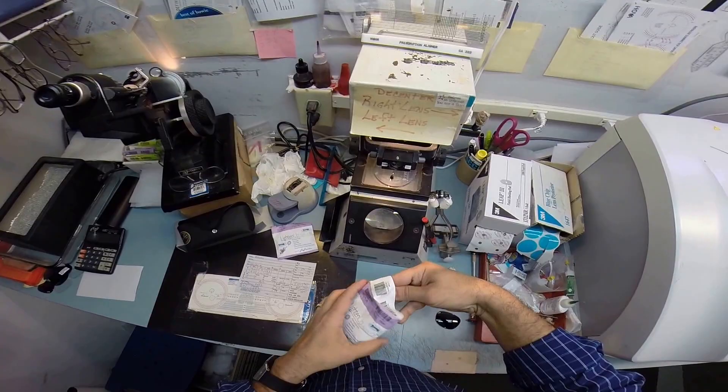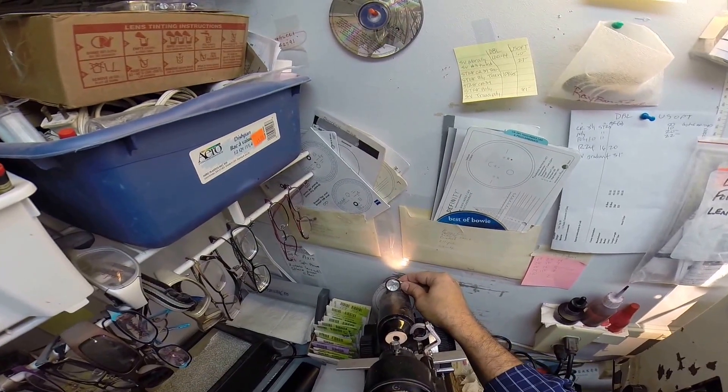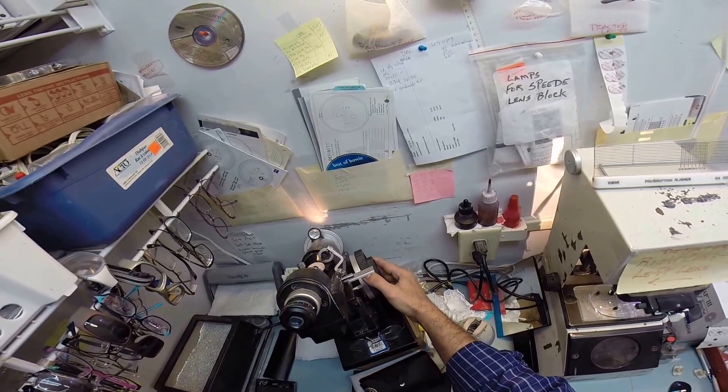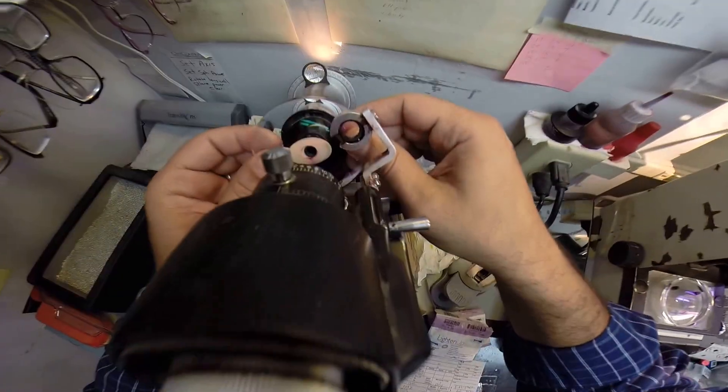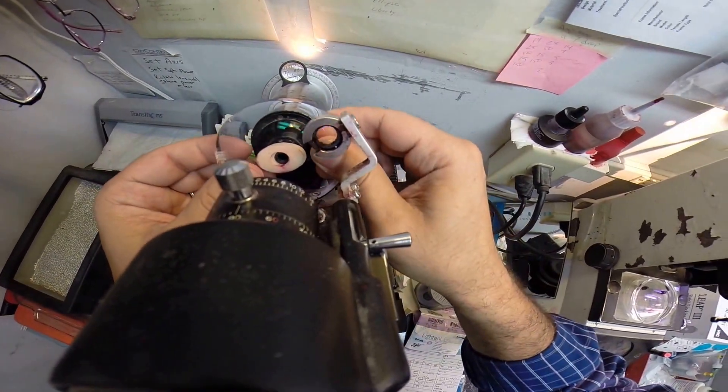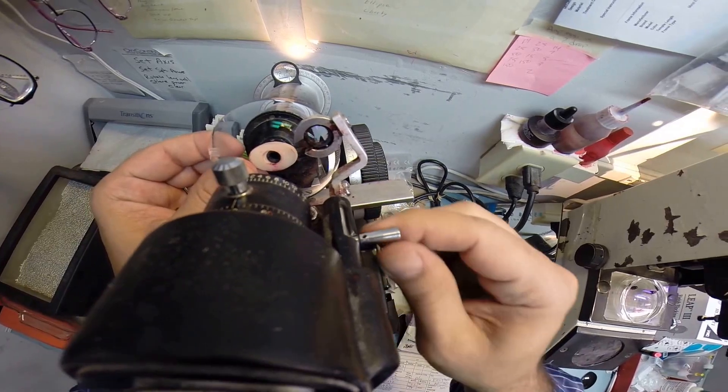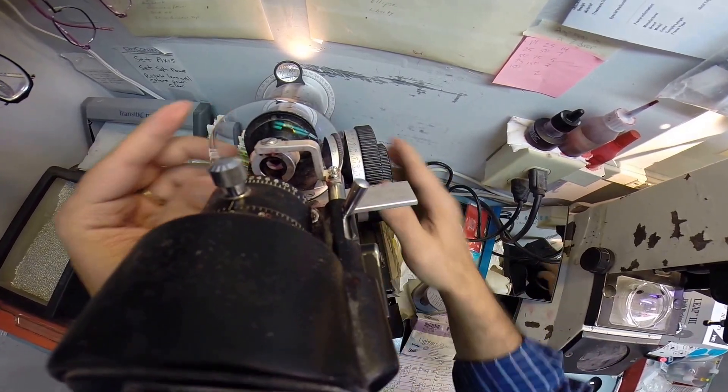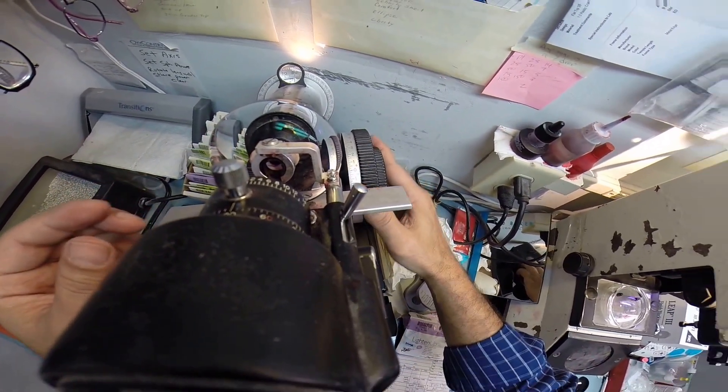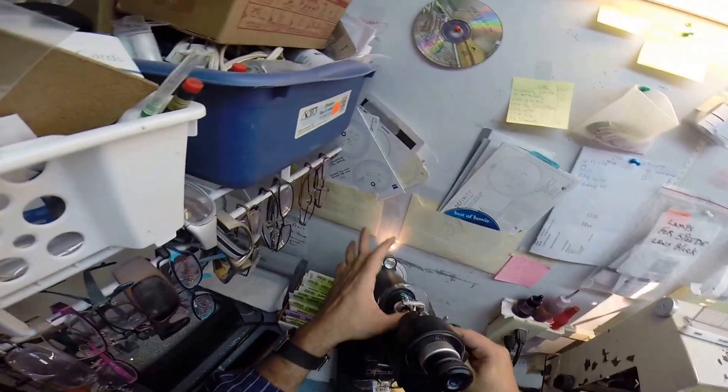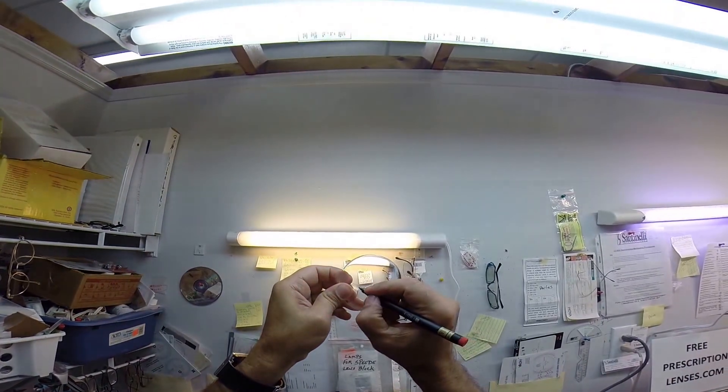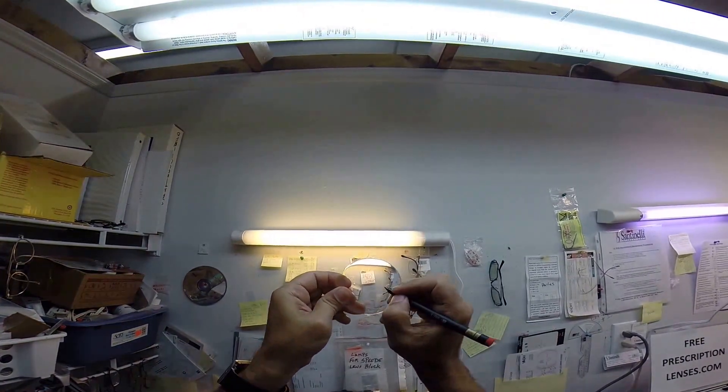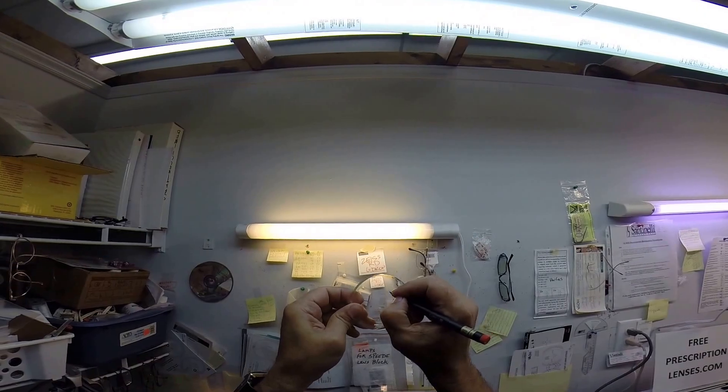Let's do the same thing for your left lens. Minus 4 and a quarter, minus 1 at 80. I'm going to spin the axis wheel to 80, put the power drum on 4 and a quarter. Put your lens in, rotate your lens so I find the sphere power clearly and the optical center. Let's put some new dots on your lenses. That is one, two, and three. And that is the left.